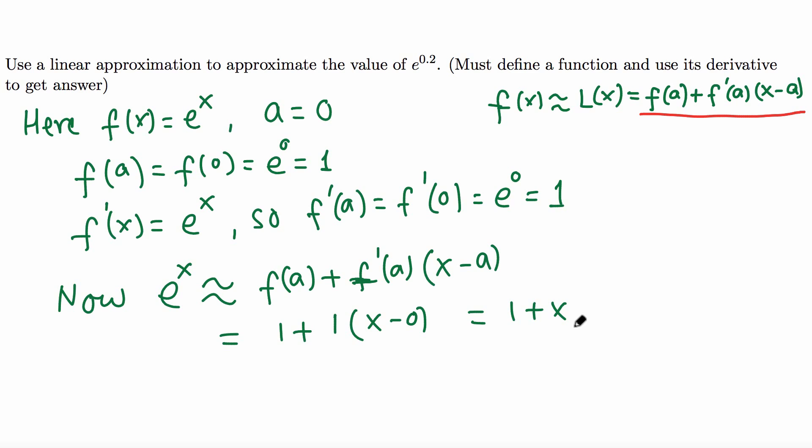So e^x, this curve, is approximated by this straight line 1 plus x, and 1 plus x is a linearization of this curve. But we are supposed to find e raised to 0.2.